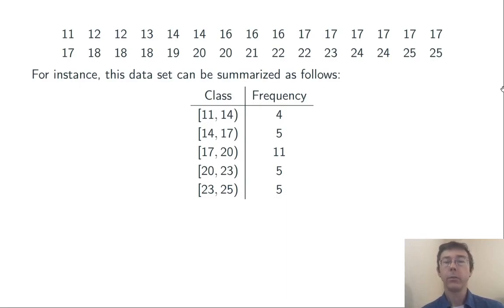Here, I've divided the range from 11 to 25 into 5 classes, and then counted how many observations fall into each of those classes. The notation here, with the hard bracket on the left and the soft bracket on the right, means that the left endpoint is included in each interval, the right endpoint is not.